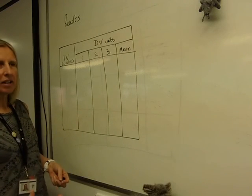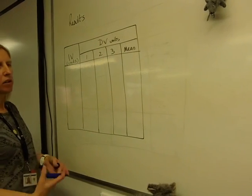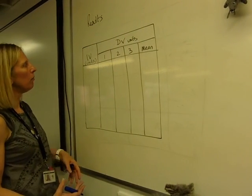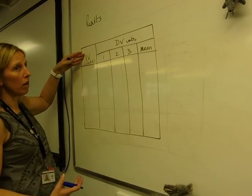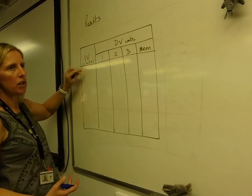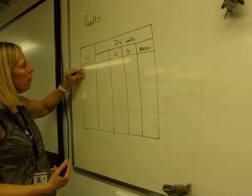It doesn't need to be neat but we need to be able to read it and there's a convention of how you set up the table. The independent variable, so the thing you're varying, goes in the first column and the convention is that you use the lowest value of the independent variable first.